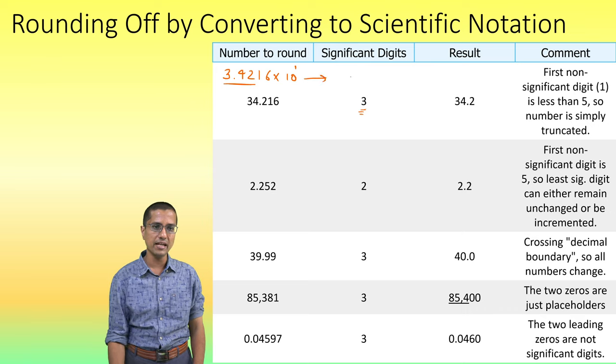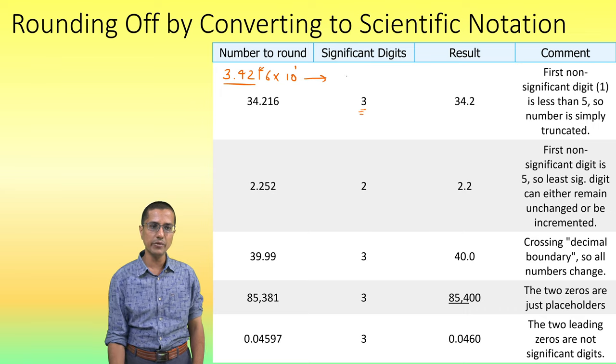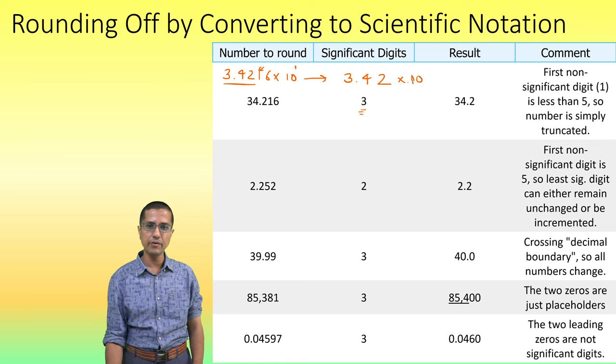So our final answer will be, and because this is the one, there is no need to do anything else. We can simply do the truncation and our answer will be 3.42 × 10¹. And at this point,